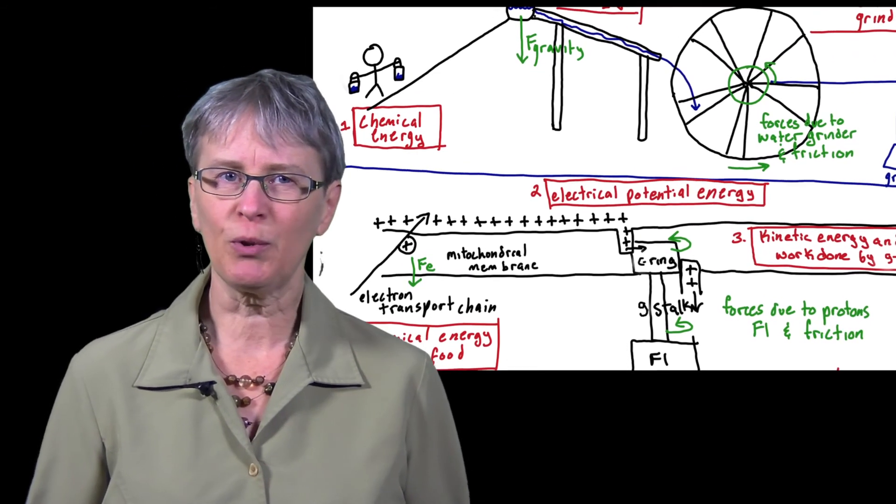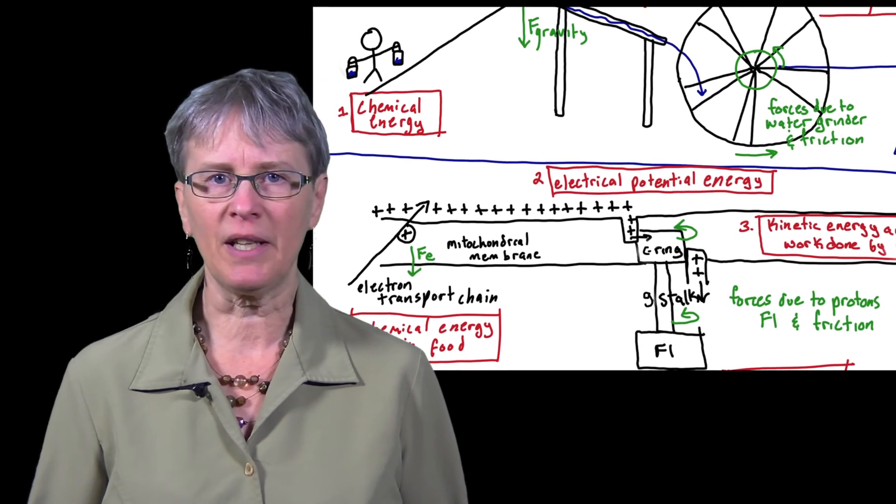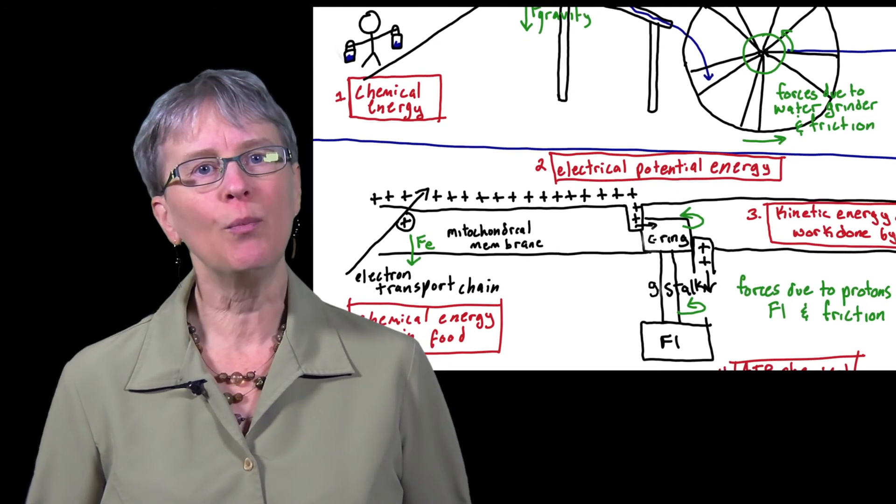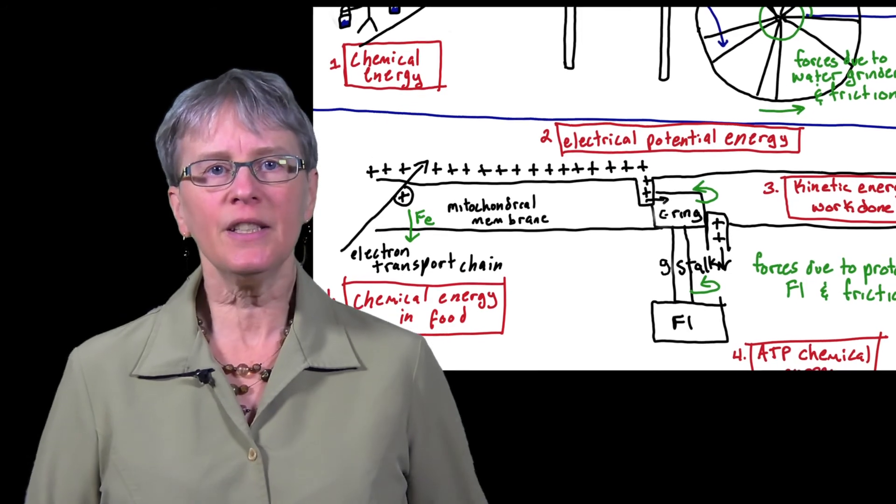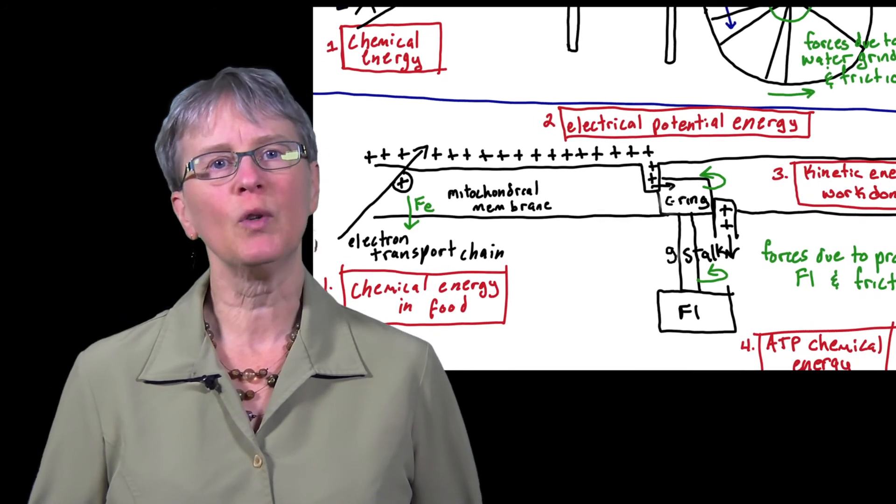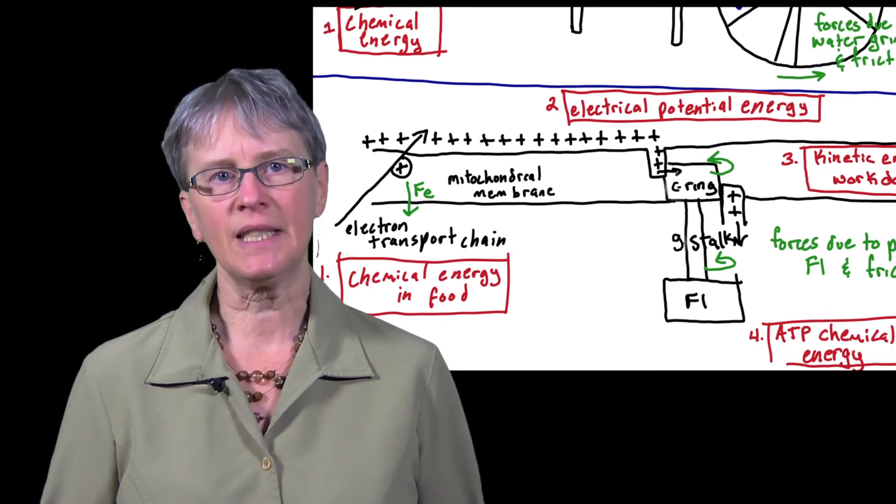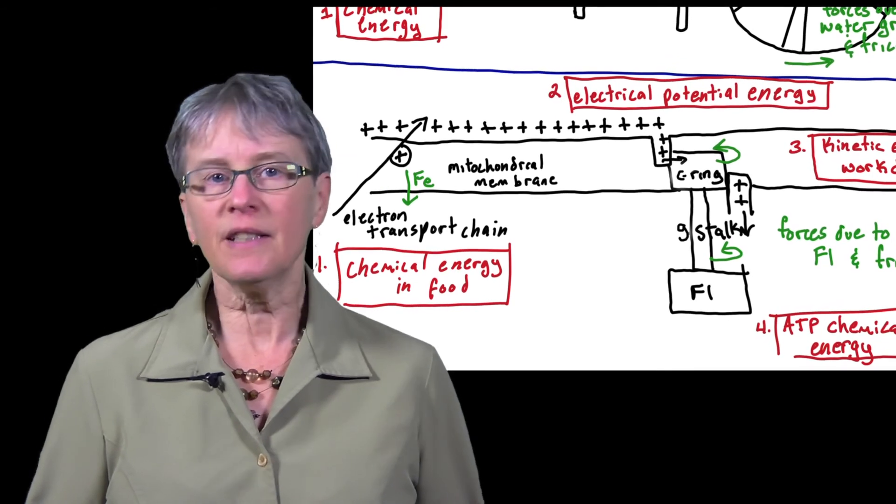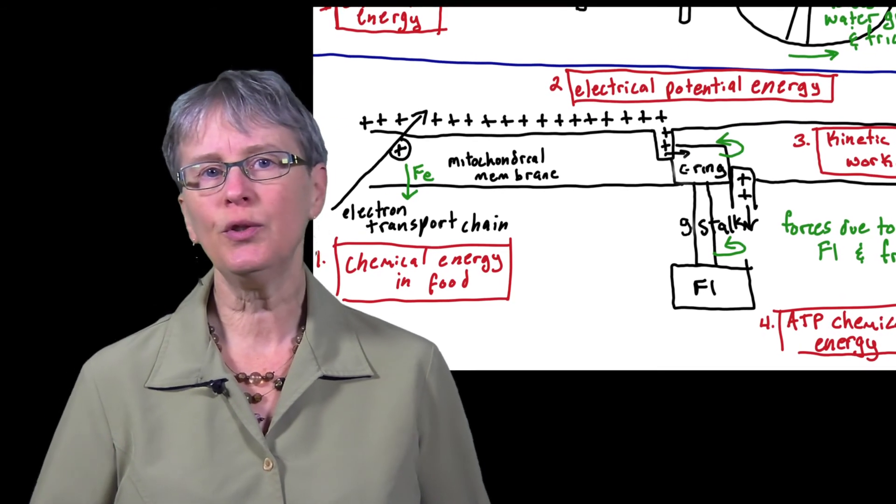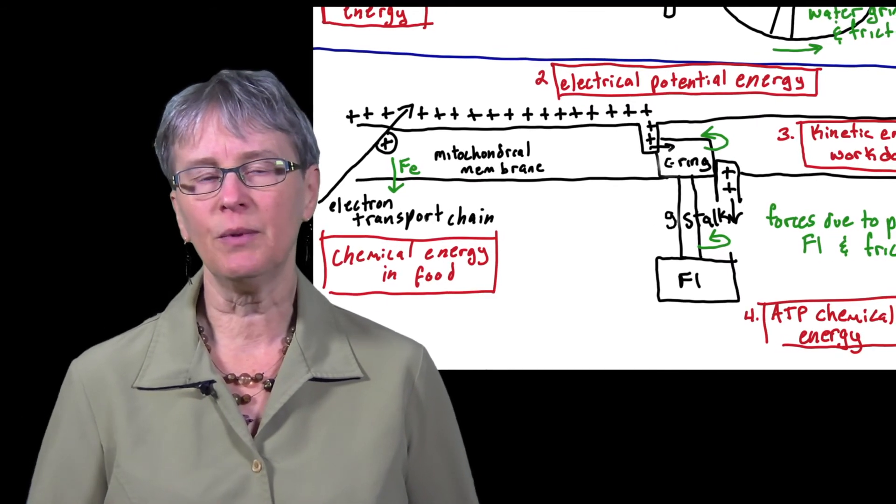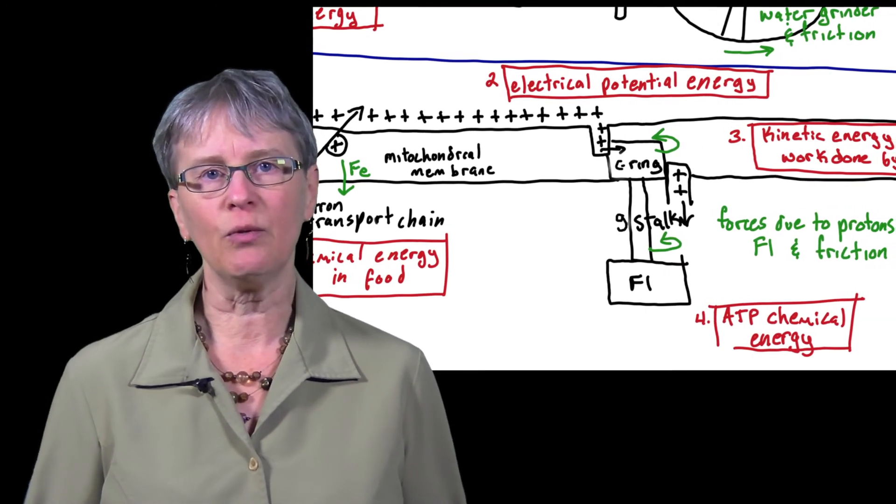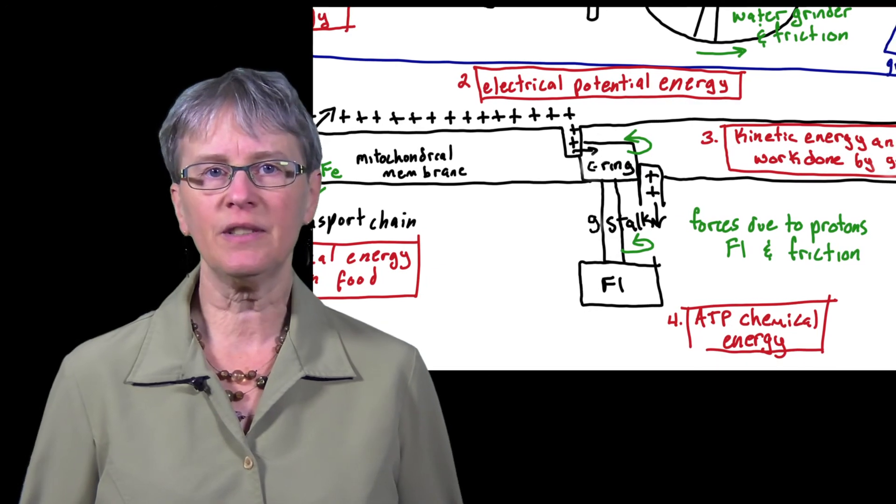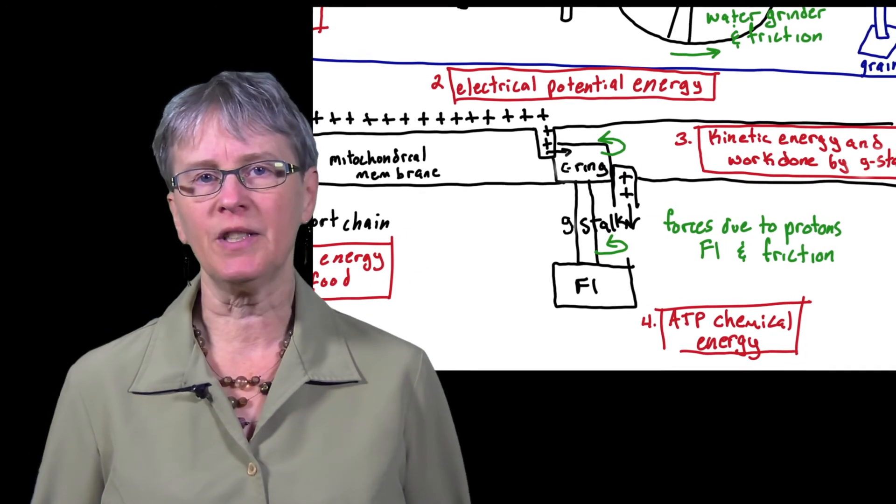Next, the electron transport chain moves the protons across the mitochondrial membrane, so there are more protons in the outer compartment than the inner compartment. This stores energy in the form of what is known as electrical potential energy. This potential energy is then used to turn the rotor made of the C ring in the gamma stalk, which in turn exerts a force on the F1 complex, and that results in the conformational changes required to make ATP.